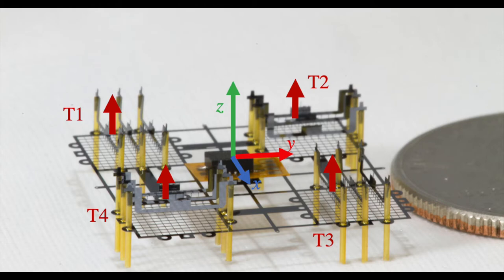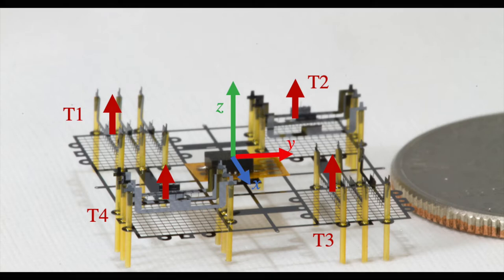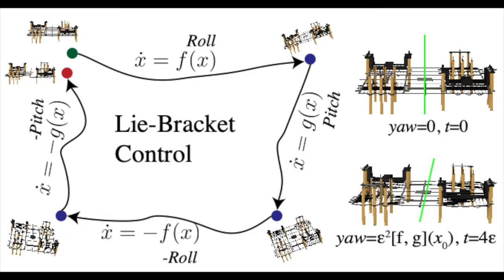The ionocraft has no moving parts and generates thrust with high-voltage electric fields moving charged ions. Other than the thrust mechanism and lack of yaw coupling, the dynamics are similar to that of a quadrotor. The Lee Bracket is defined by a series of repeated motions in two planes of motion, generating motion in a third, previously unaddressable plane.